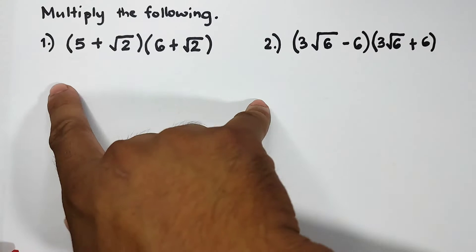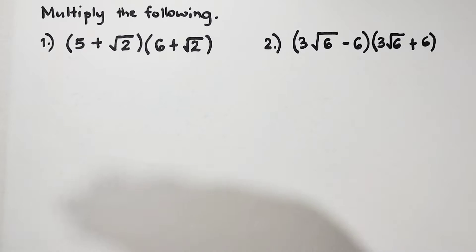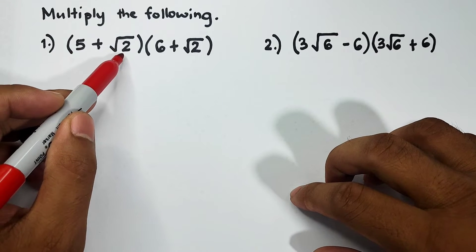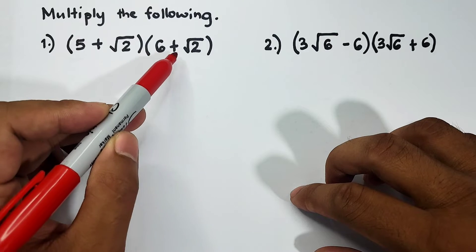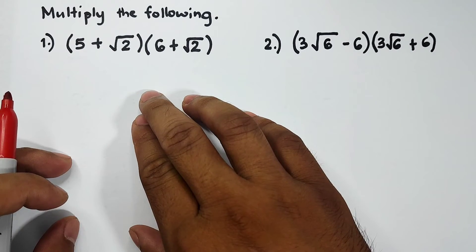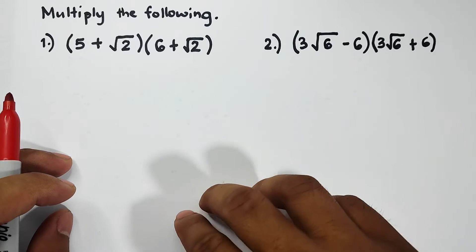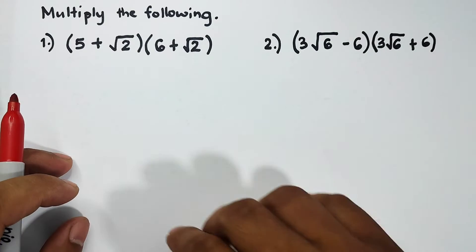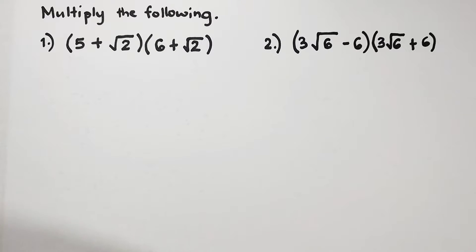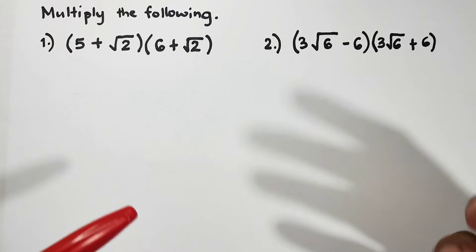Let's start with item number one. In number one we are given here 5 plus the square root of 2 times 6 plus the square root of 2. Here we don't have a given pattern that we can use in algebra for us to easily multiply these two expressions with radicals.